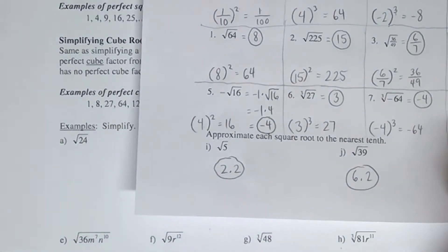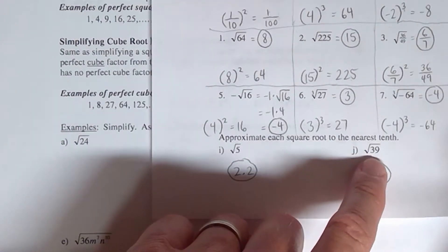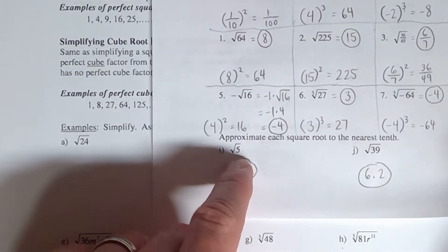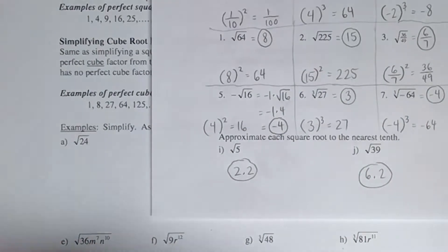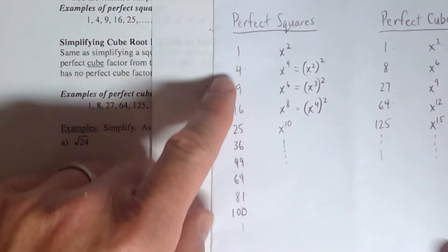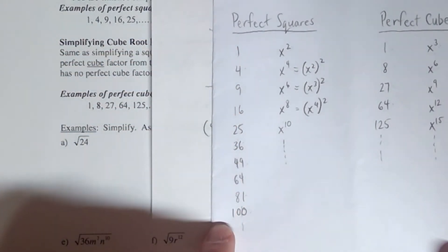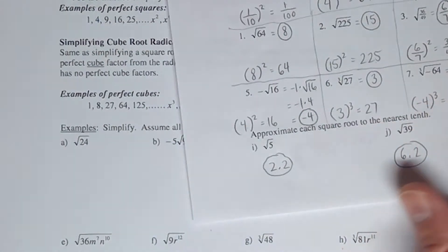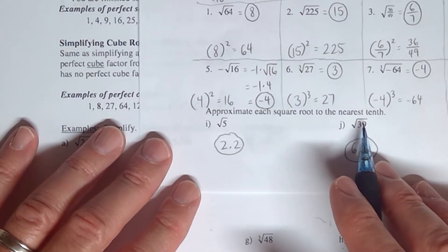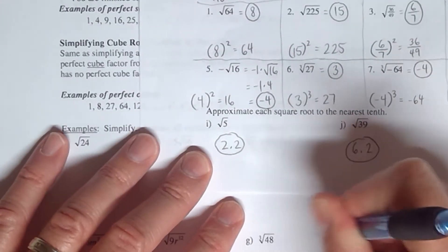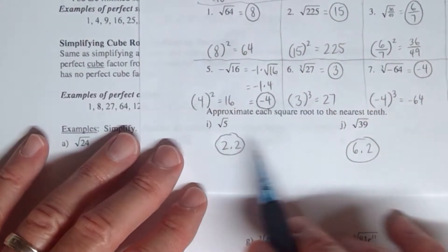I don't want you to think that you can just put this in your calculator because it looks similar to problems where the number is not a perfect square — like 5 and 39, which are not perfect square numbers. Those are numbers where you couldn't figure out the square root easily. Notice that in 9.1, it said 'approximate each square root to the nearest tenth,' meaning use your calculator to find a decimal answer and then round it off.